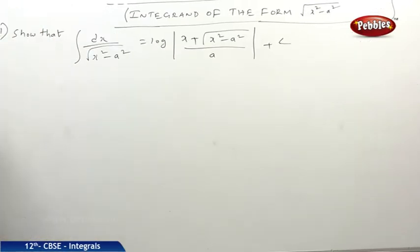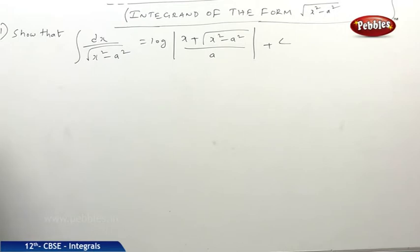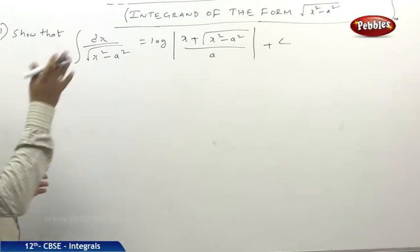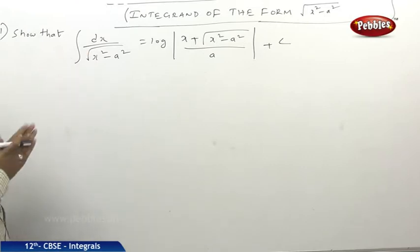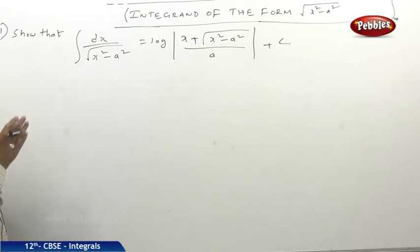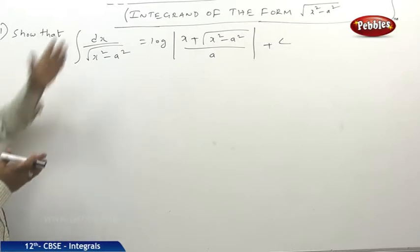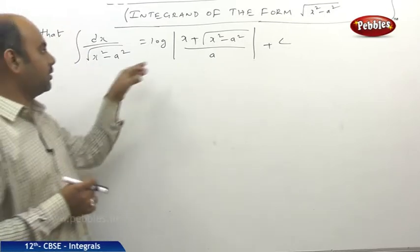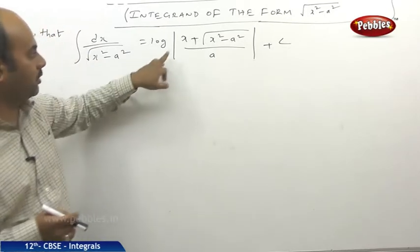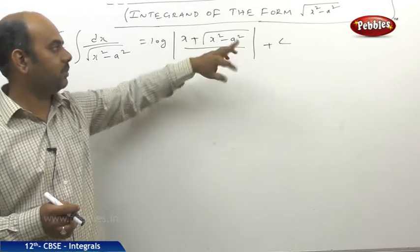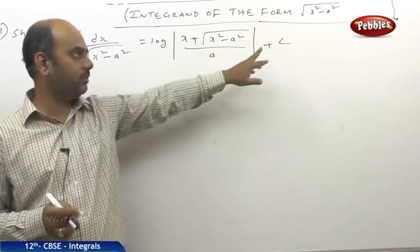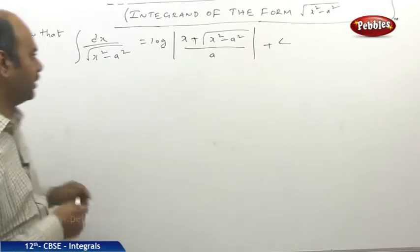In substitution methods, sometimes we come across integrands of the form under root of x² minus a². Earlier we had seen under root of x² plus a², but now it is under root of x² minus a². The problem is: integral of dx by under root of (x² minus a²) equals log mod (x plus under root of (x² minus a²)) divided by a, plus c.